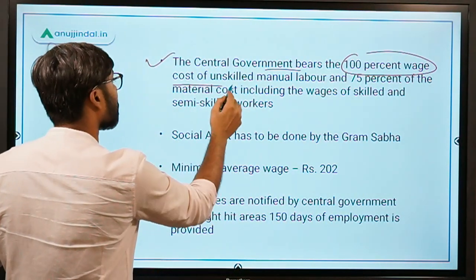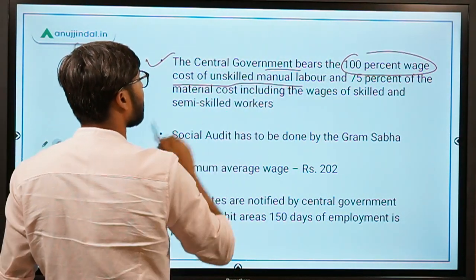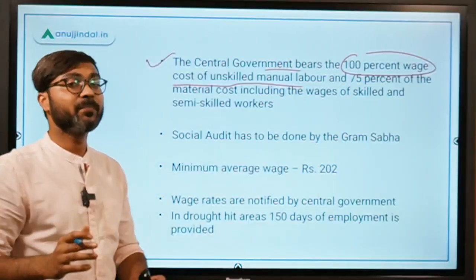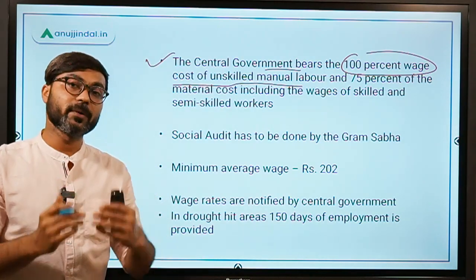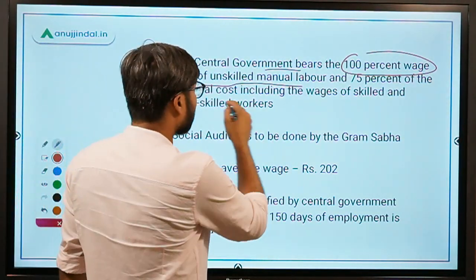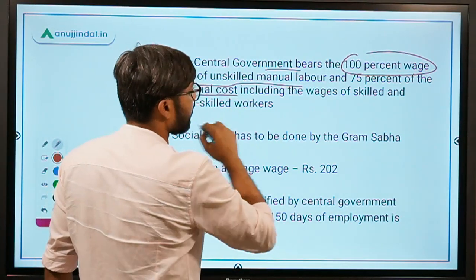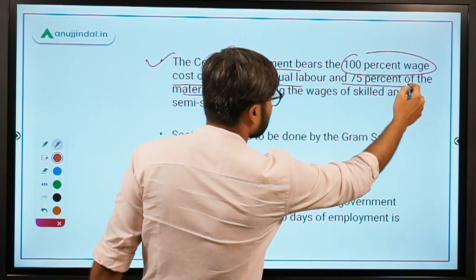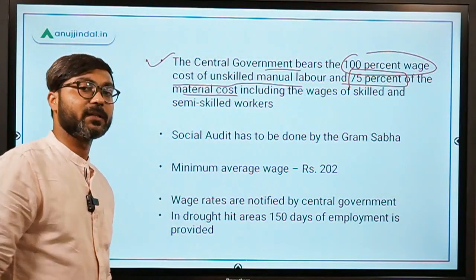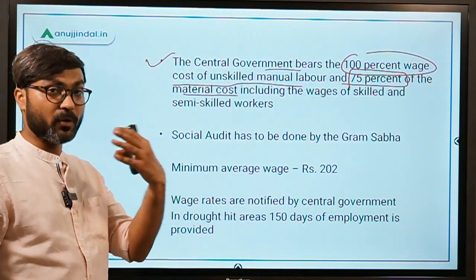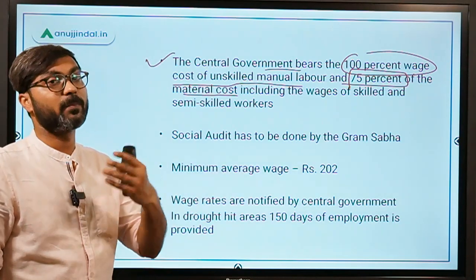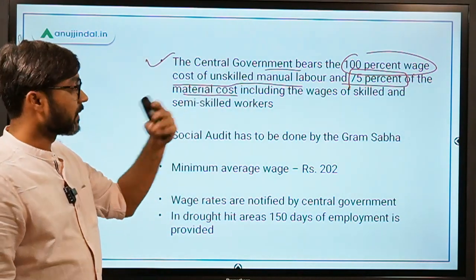The central government bears 100 percent of the wage cost of unskilled manual labor. Regarding material cost, the central government bears 75 percent, while the remaining 25 percent is borne by the respective state governments.